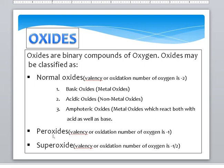Peroxide — in a Peroxide, the concentration of Oxygen is larger than in the Normal Oxide. The valency or oxidation number of Oxygen is minus 1.